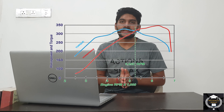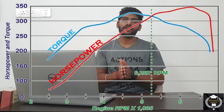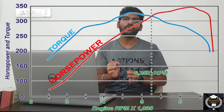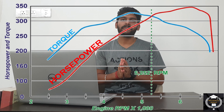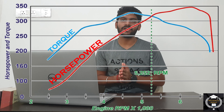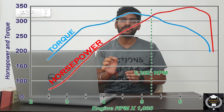If we look at the graph of torque and power, we can see that at 5252 RPM, torque and horsepower are equal. You can see this crossover point on the graph.